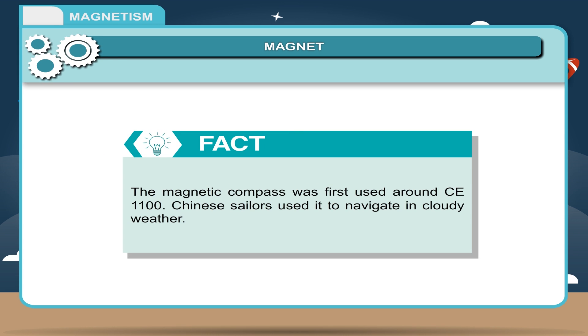Fact: The magnetic compass was first used around CE 1100. Chinese sailors used it to navigate in cloudy weather.